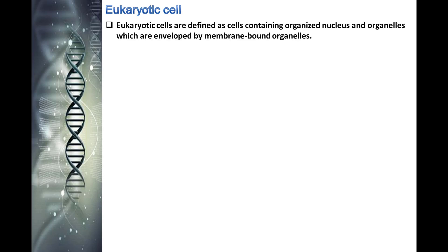Eukaryotic cells are defined as cells containing an organized nucleus and organelles, which are enveloped by membrane-bound organelles. Examples of eukaryotic cells are plants, animals, protists, and fungi. 'Eu' means true, 'karion' means nucleus — a eukaryotic cell has a true membrane-bound nucleus.